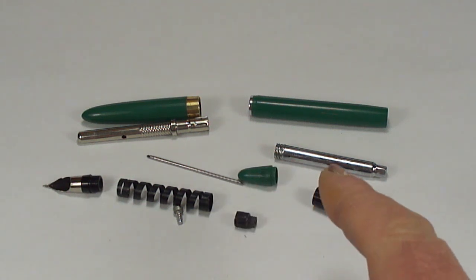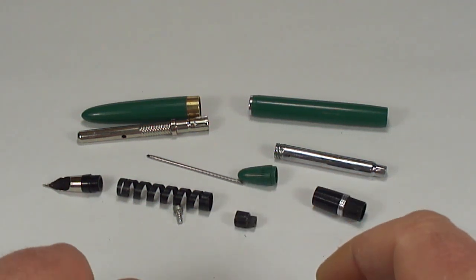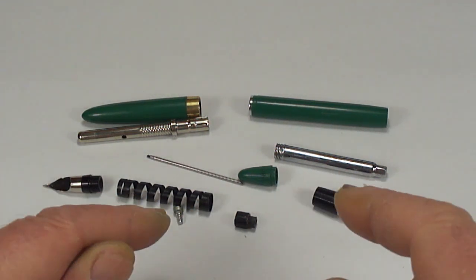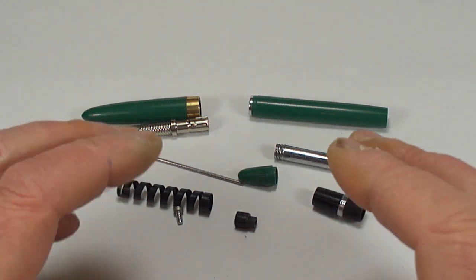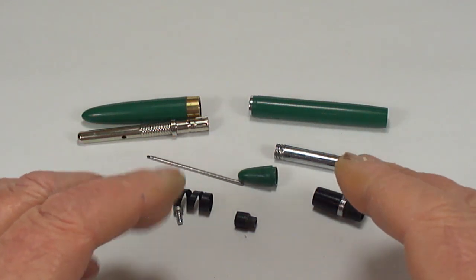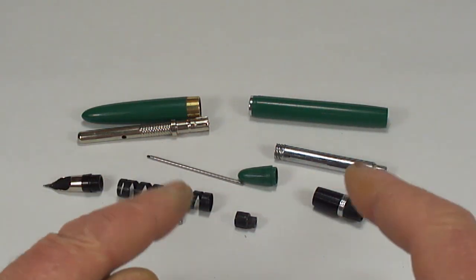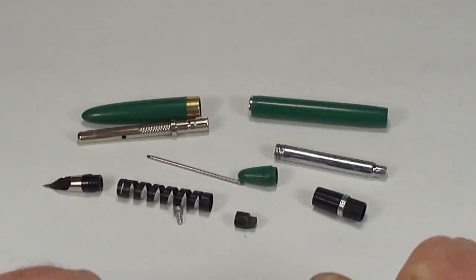What we've got here is a Schaefer snorkel special fountain pen. It's not a how-to, so what I'm going to do is describe to you the parts inside a Schaefer snorkel and then after I've done that I'll put the pen together and we'll do a very brief review of the pen.